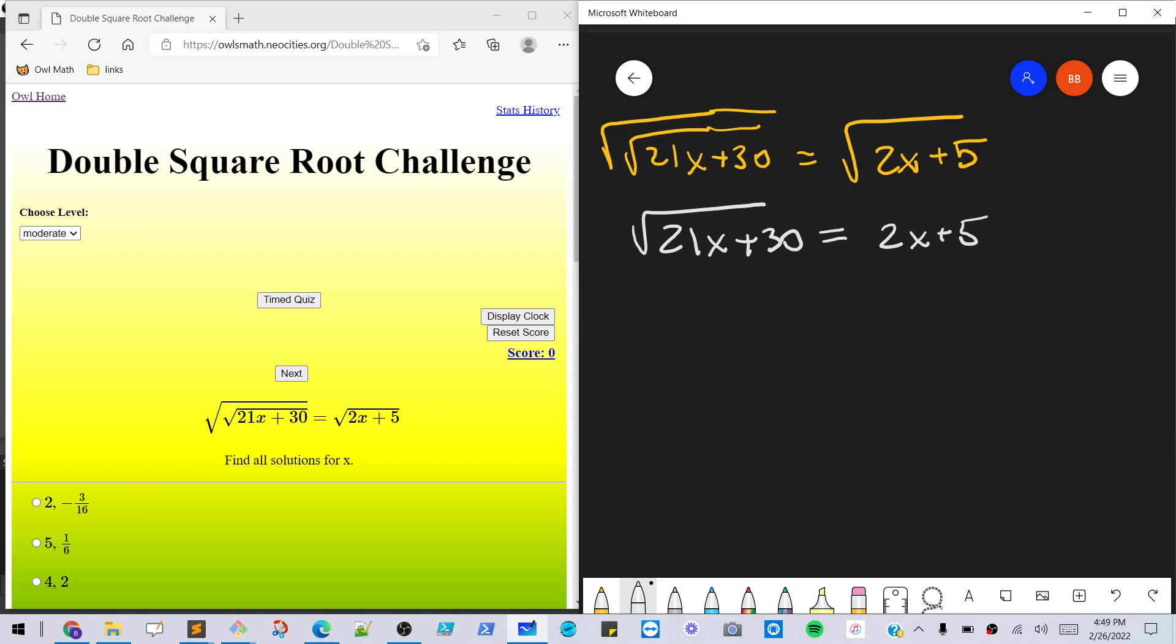And then we'll just square it again on both sides. So then we'll have 21x plus 30 equals 4x squared plus 20x plus 25.